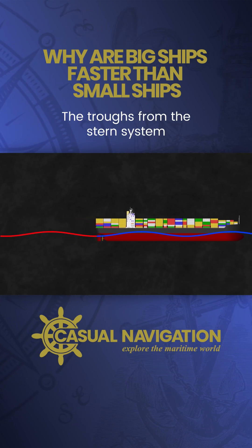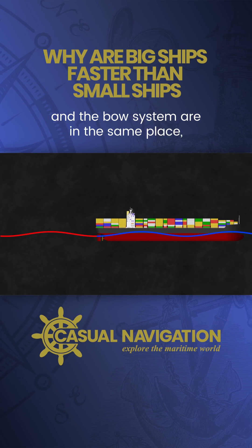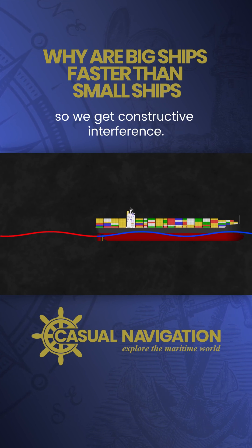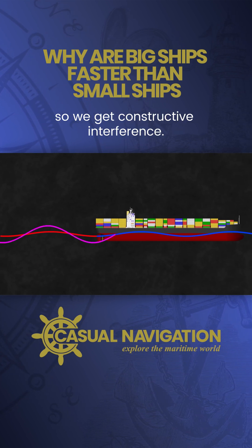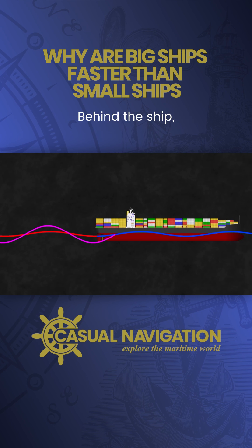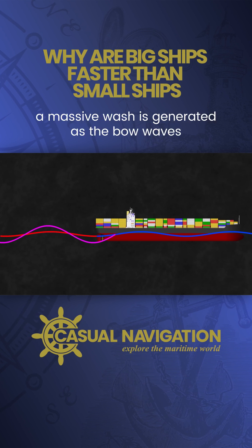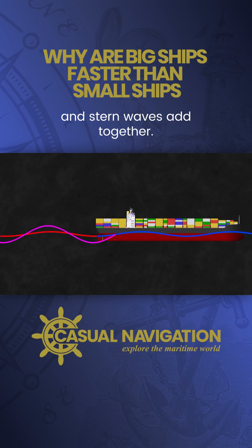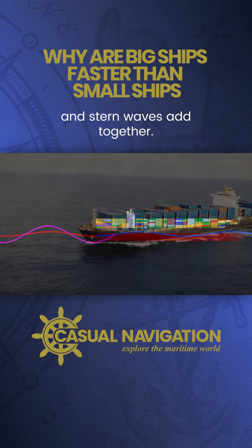The troughs from the stern system and the bow system are in the same place, so we get constructive interference. Behind the ship, a massive wash is generated as the bow waves and stern waves add together.